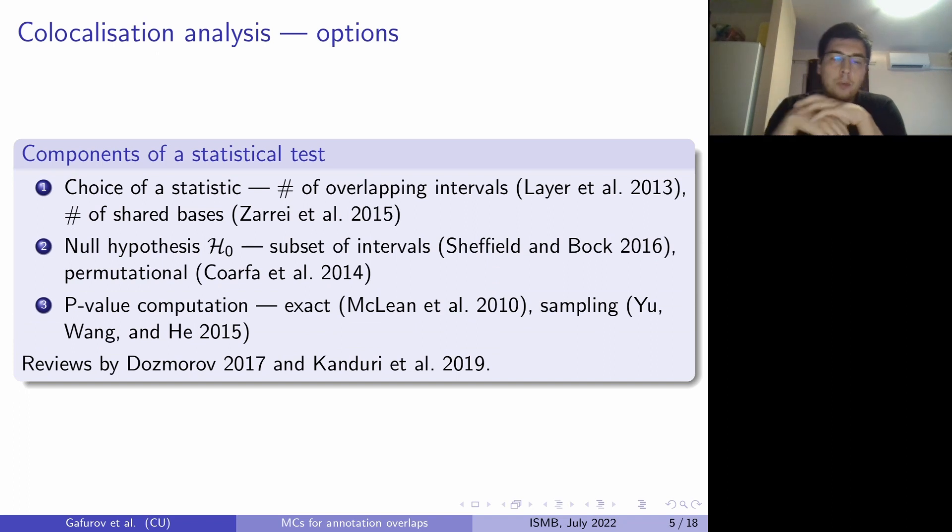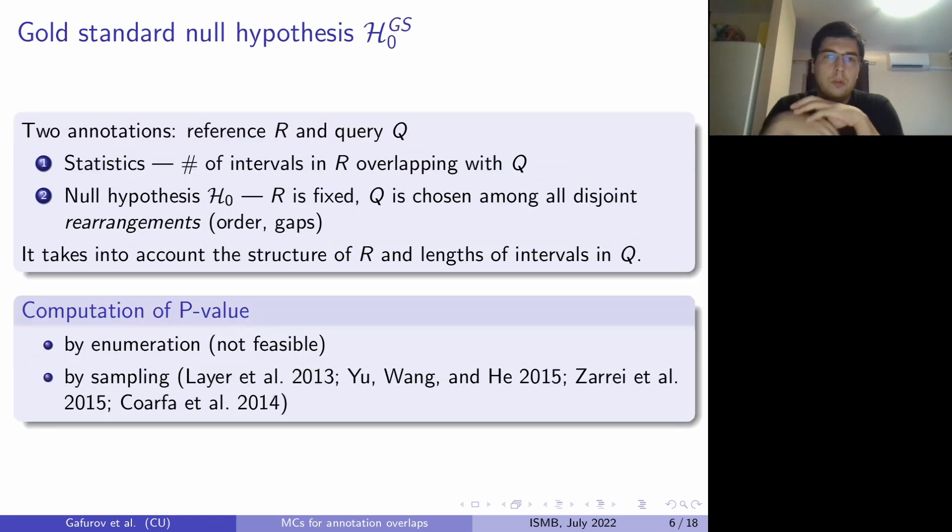There are many options to select those components and we will talk about the particular one which we'll call gold standard. In gold standard hypothesis, we have two annotations which we call reference R and query Q, and statistics is the number of intervals in R which overlap with Q. The null hypothesis is that the reference annotation is fixed and the query annotation is chosen uniformly at random among all disjoint rearrangements.